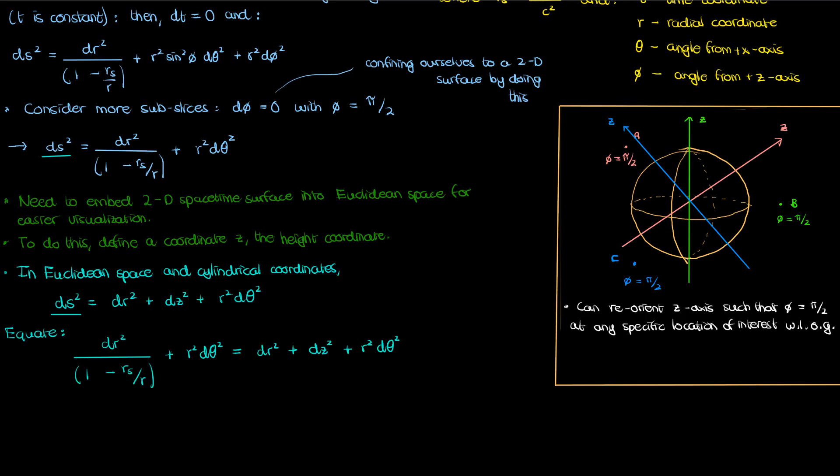I'll simplify by cancelling out the d theta term and dividing both sides by dr squared to get the following differential equation for z in terms of r.